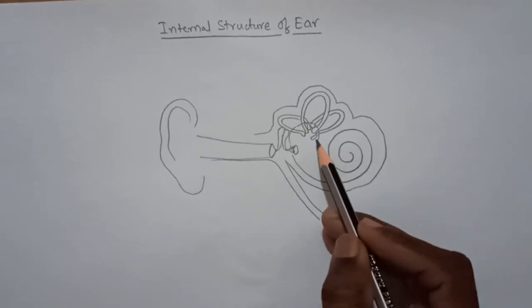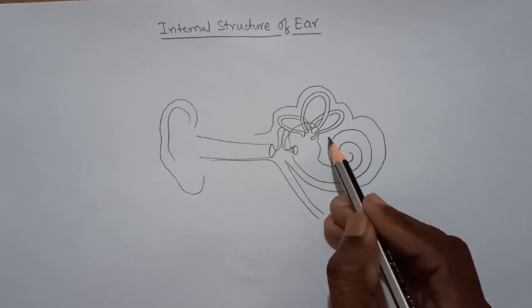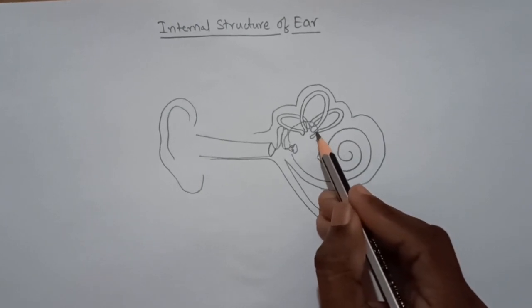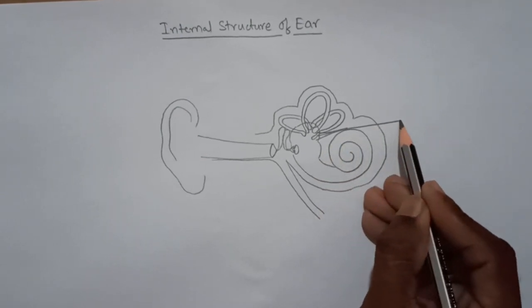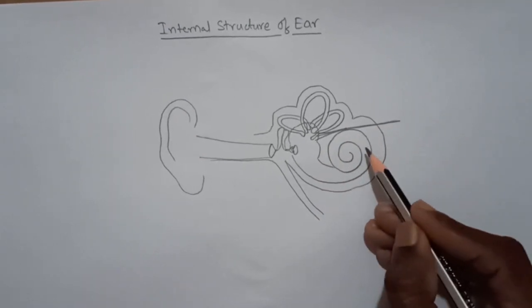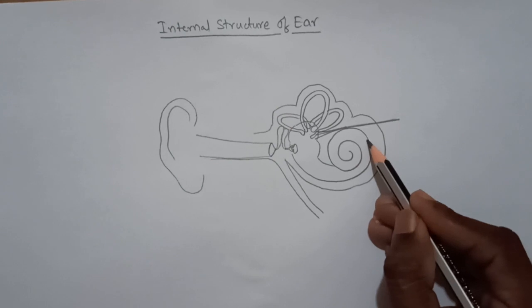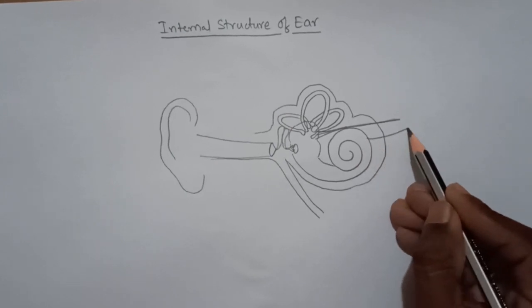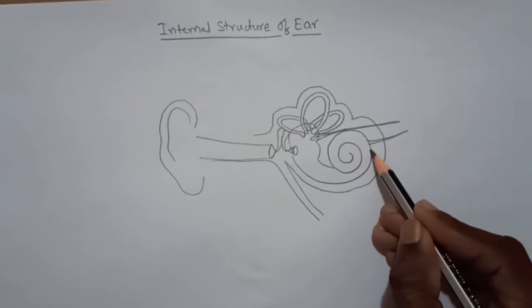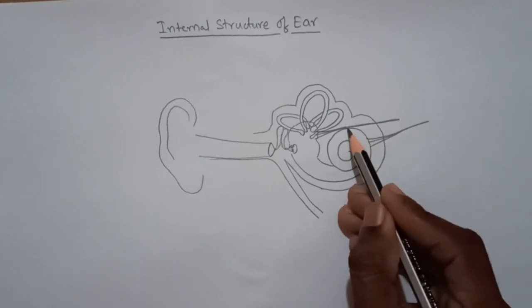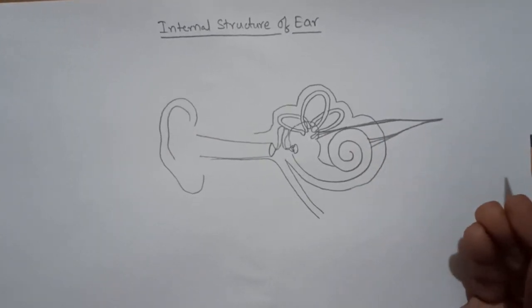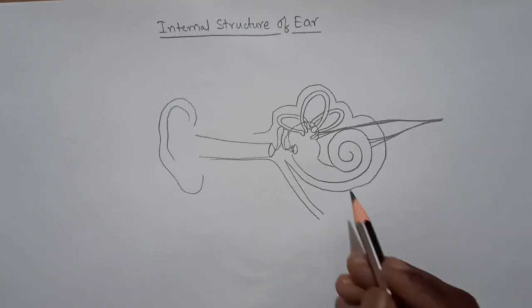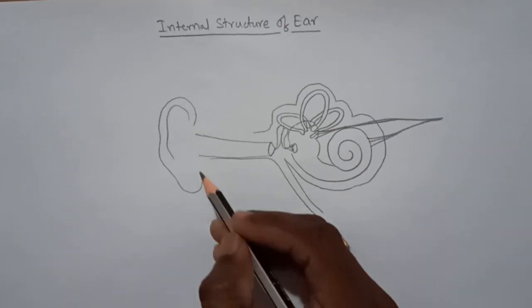From this vestibule we have to draw the vestibular nerve. And from this cochlea we have to draw the cochlear nerve. Both these are formed as the auditory nerve. Right. With this, the diagram is completed.